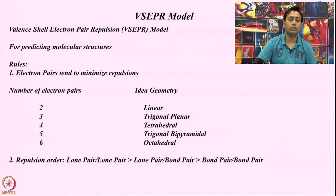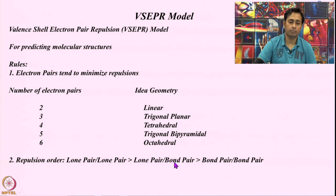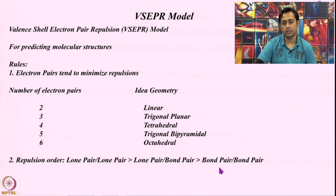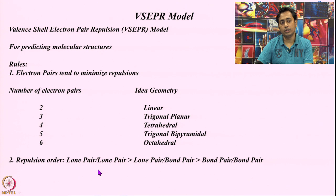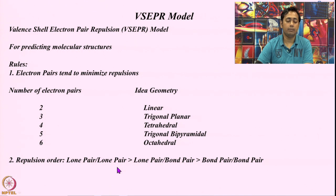The repulsion between lone pair and lone pair is actually the strongest, compared to lone pair–bond pair repulsion, and bond pair–bond pair repulsion which faces the least amount of repulsion. The actual structure of the molecule will differ a little from the ideal geometry in order to avoid lone pair–lone pair repulsion, giving preference instead to lone pair–bond pair or bond pair–bond pair arrangements.